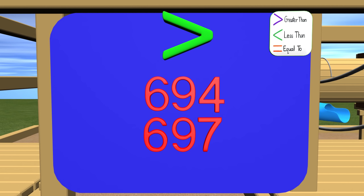Now we look at the ones place, and the number on top has 4 ones, and the number on bottom has 7 ones. We know that 7 is the greater number. 697 is greater than 694.